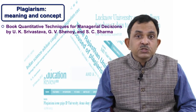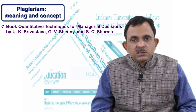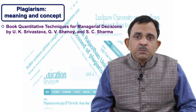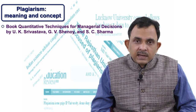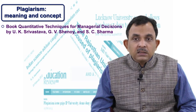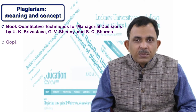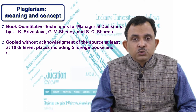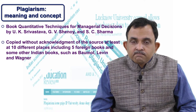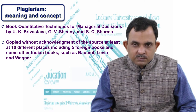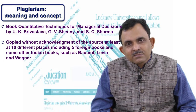When he was browsing those books, he found that the book written by Srivastava, Srinoy, and Sharma had a lot of material which had been simply lifted from the other three books, with no citation and no acknowledgement. He reported this to the director, who framed an inquiry committee. The committee found that Quantitative Techniques for Managerial Decisions had copied content without acknowledgement at least at ten different places, including from five foreign books and some Indian books — all published prior to that book.